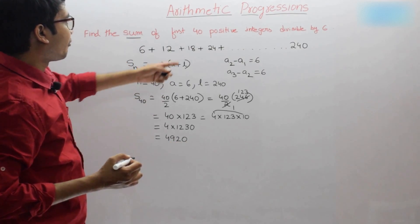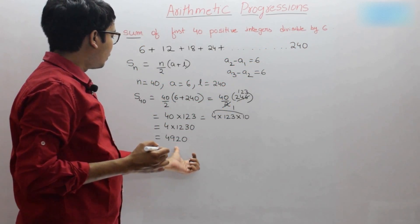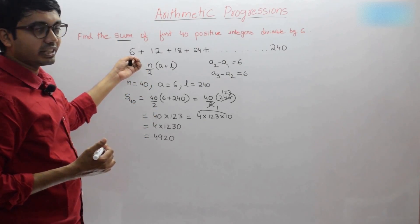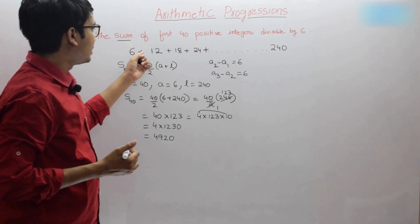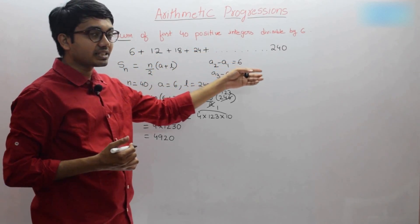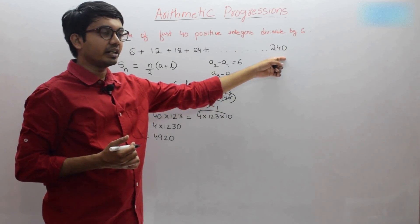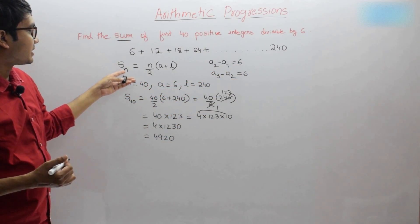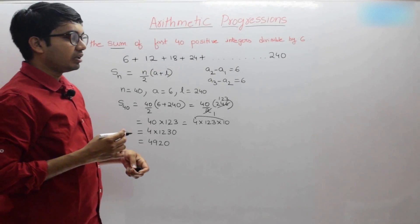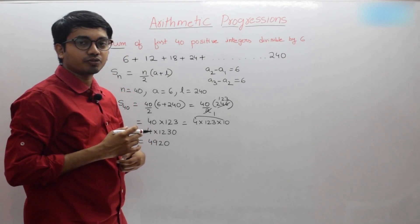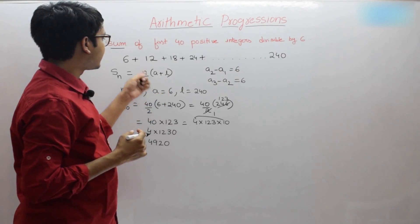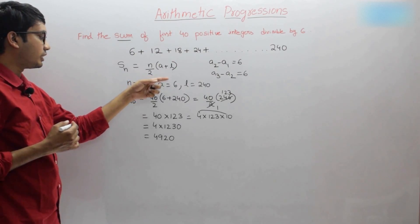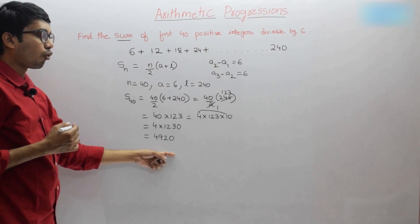Finally, this gives us 4920. So the sum of the first 40 positive integers divisible by 6 is 4920. To summarize: the first number divisible by 6 is 6, the last is 240 (since 6 into 40 is 240). Using Sn equals n by 2 into a plus l, with a equals 6, l equals 240, and n equals 40, substituting these values gives the sum as 4920.